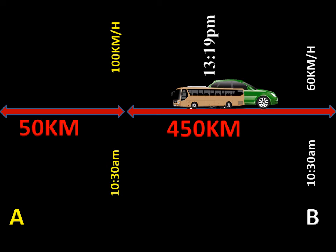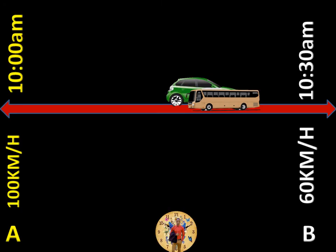Another question you can be asked in this situation is: how far from town A did the two vehicles meet? To find the distance from town A where the two vehicles met, you use the time when the two vehicles met, which is 13:19 p.m.